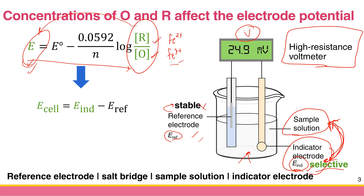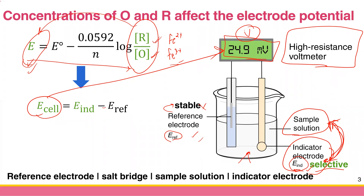What is the measured number? Since we are measuring the potential difference between the indicator electrode and the reference electrode, and we usually place the indicator electrode on the right and the reference on the left, the E_cell is in theory equal to E_indicator minus E_reference.